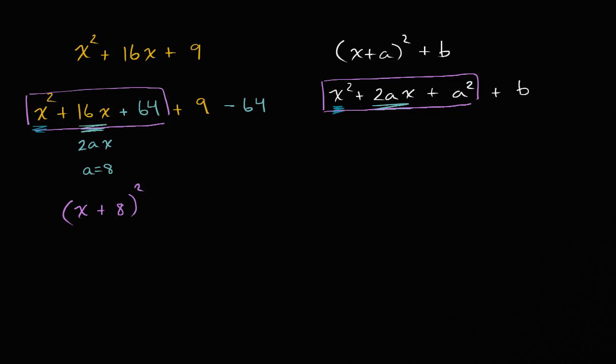And then all of this business on the right-hand side, what is nine minus 64? Well, 64 minus nine is 55, so this is going to be negative 55. So minus 55. And we're done. We've written this expression in this form, and what's also called completing the square.